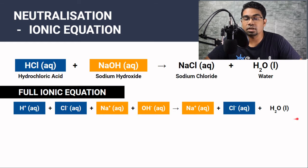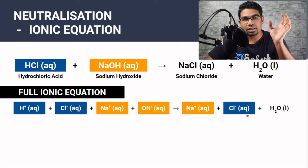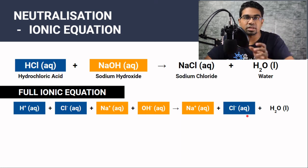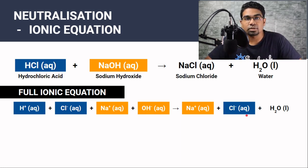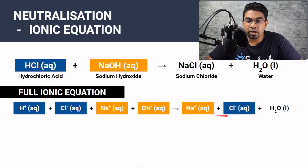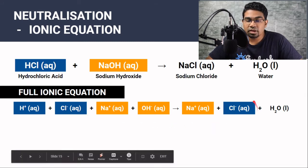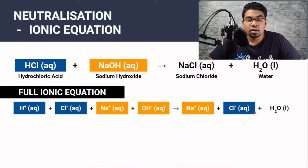The full ionic equation shows all the ions, but we also have the net ionic equation. When we look at this equation, you'll notice that not all ions have reacted — some ions are just watching. They are exactly the same at the beginning and at the end of the reaction, and these are known as spectator ions. H⁺ ions have become part of the water molecule, so they are not spectator ions. But chloride ions exist as Cl⁻ before the reaction and are still Cl⁻ after, so chloride is a spectator ion. We get rid of spectator ions.